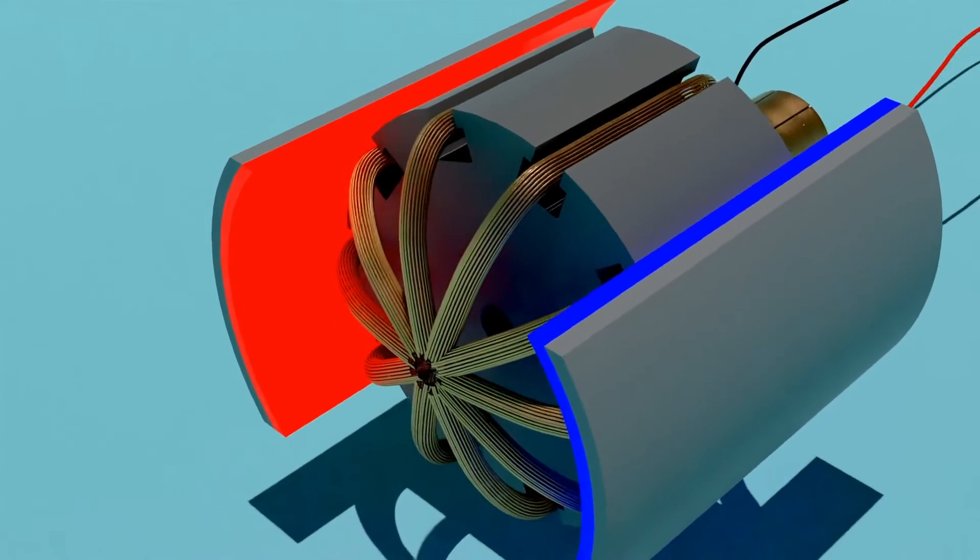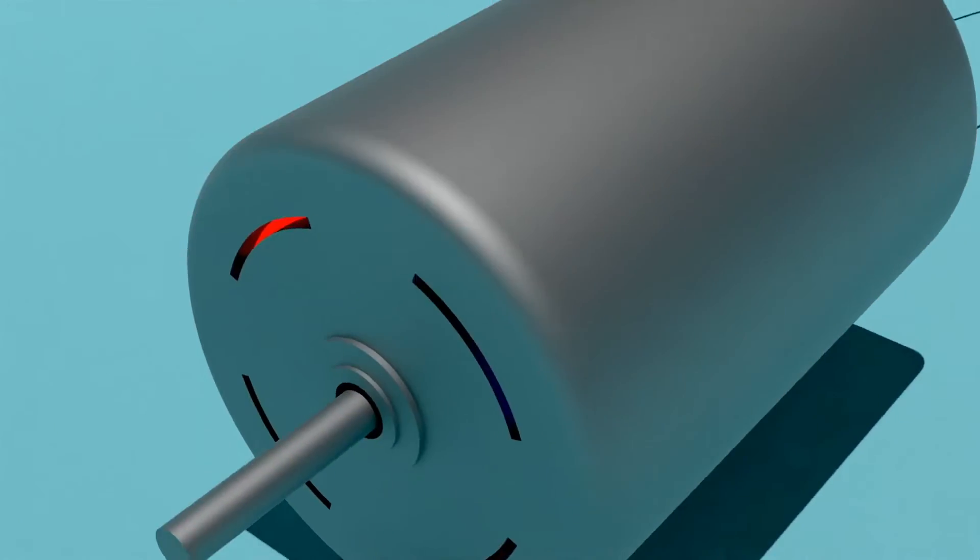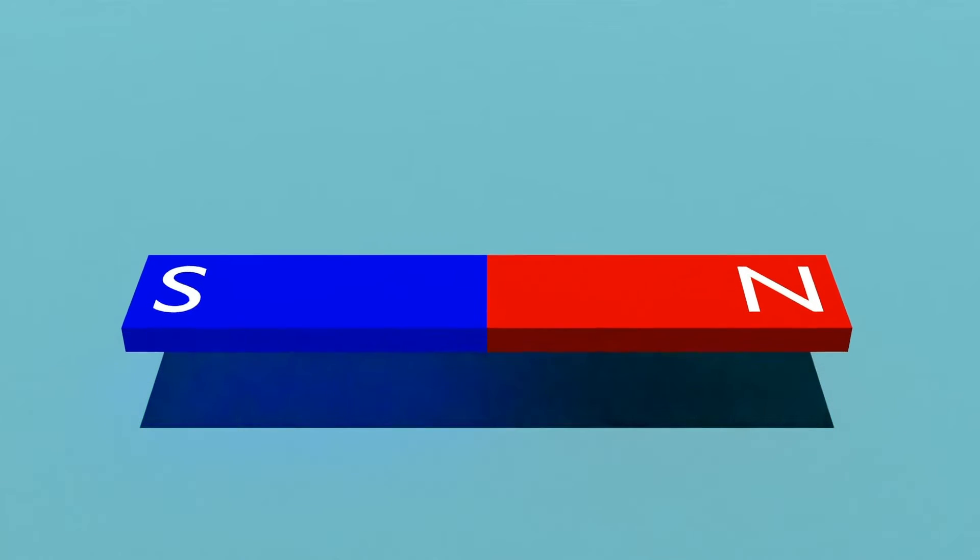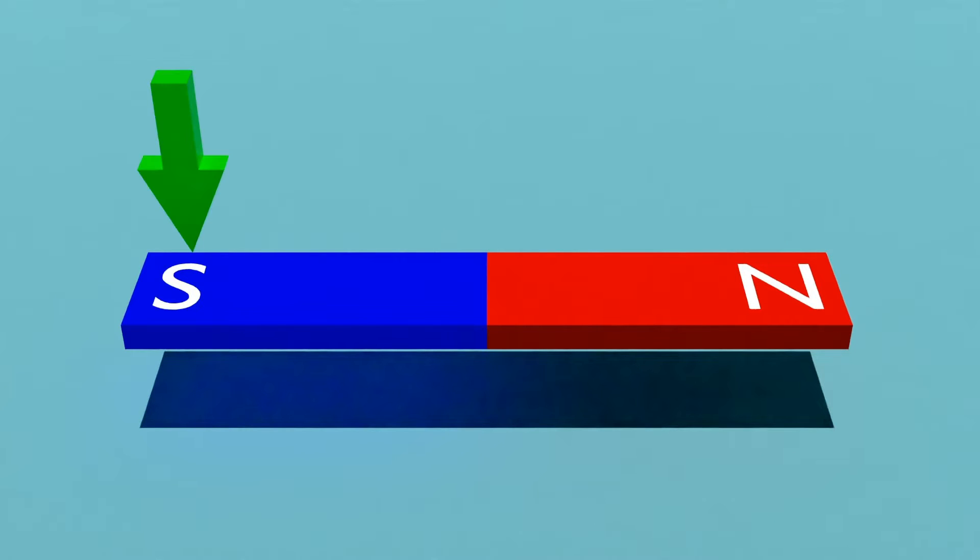Before discussing the DC motor's working, let's learn some basic concepts of magnets and electricity. This is a magnet, also called a permanent magnet. It has two poles: the north pole and the south pole.